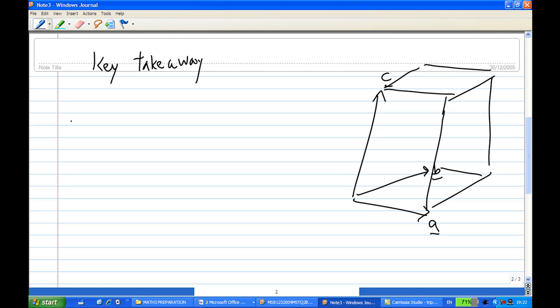then the volume of this thing is a dot b cross c, or a cross b dot c, with the absolute value.